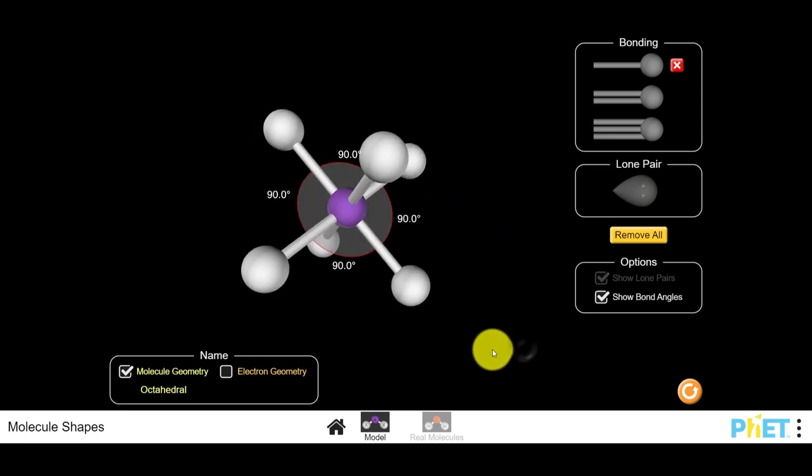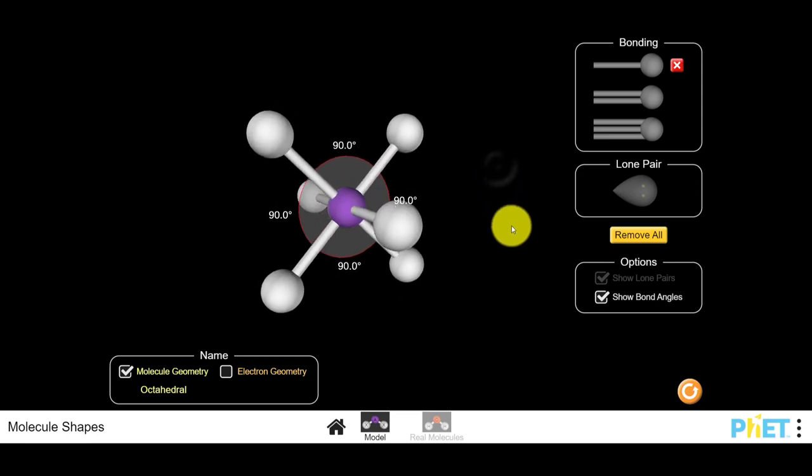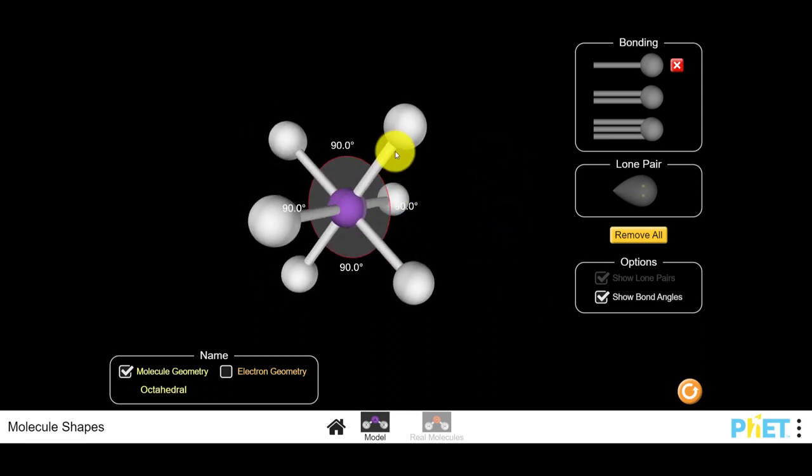Just like with the trigonal bipyramid, you could also consider the bond angle for two bonds that go straight through the middle. So you could also consider a 180 degree bond angle in your octahedron, and then 90 degree angles from one plane to the next. Everything is perpendicular.